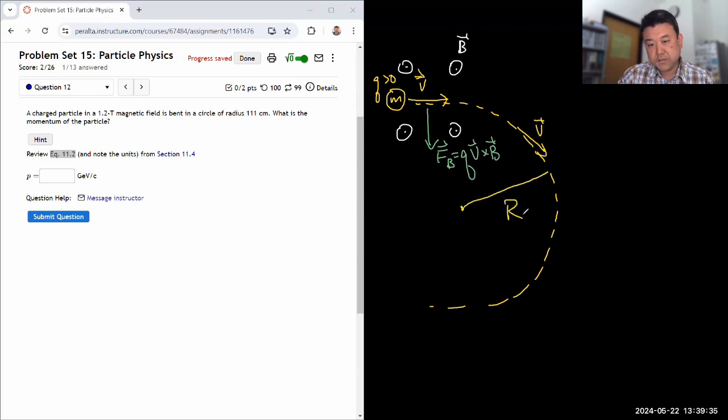And the information that they are giving us is that this travels in some radius R. So if we know it's moving in a circle in a radius of R, we know that it's undergoing a centripetal acceleration that's given by v squared over R—that's coming from Physics 4A.